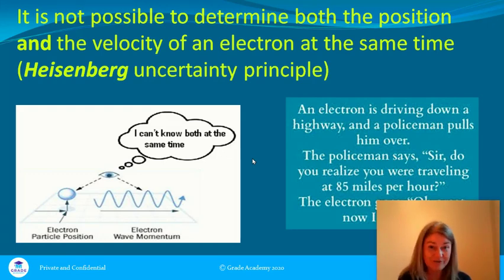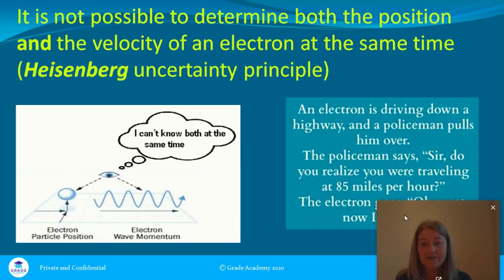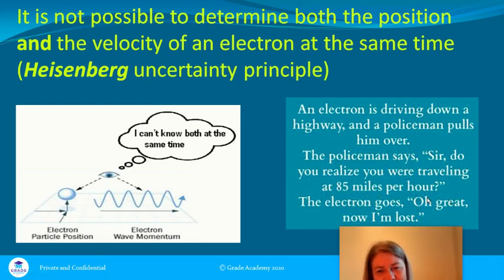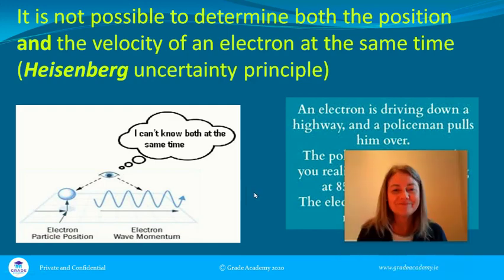You can't know both the position and the velocity at the same time. Here's a little joke: an electron is driving down the highway and a policeman pulls him over. 'Sir, do you realize you were traveling at 85 miles per hour?' — that's your velocity. The electron goes, 'Oh great, now I'm lost' — he doesn't know his position.